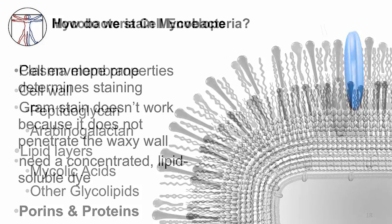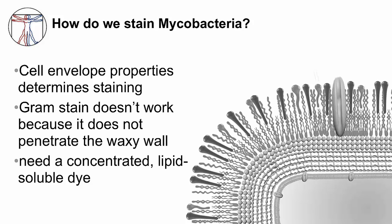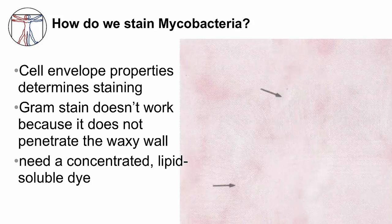The cell envelope structure is important in staining bacteria. For example, the components of the cell envelope determine the gram stain result — positive or negative. This is also true for mycobacteria. However, the unique lipid layers of mycobacteria resist the gram stain; it can't penetrate the waxy wall, so a different, more concentrated and lipid-soluble dye needs to be used. The image shows you what happens if you try to stain mycobacteria with a gram stain — the arrows point to their ghost-like image, which are quite difficult to see.